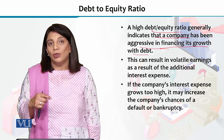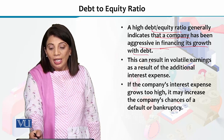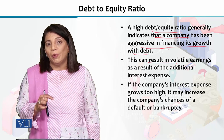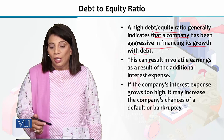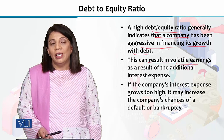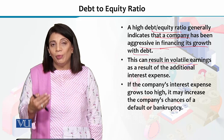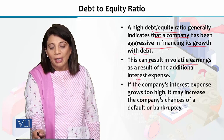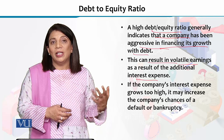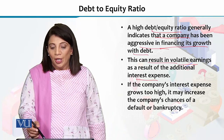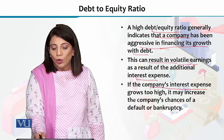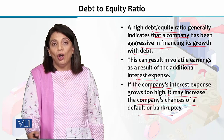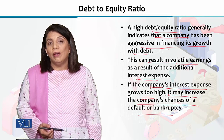This will be the interpretation if the debt to equity ratio value comes out high. In this case, if your debt is significantly larger in proportion to your equity, it means that your earnings can be volatile — there can be a lot of fluctuation — because you have to pay a large portion of your income as interest expense. If the company's interest expense grows too high, it may increase the company's chances of default or bankruptcy.